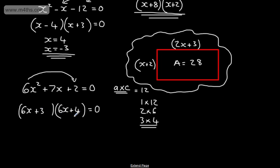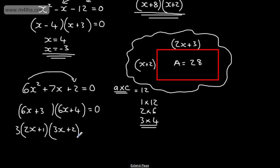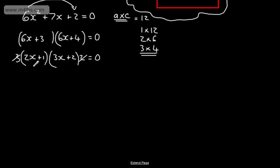Looking at the first bracket, I've got 6X plus 3. I can take the highest common factor of 3 out, which leaves me 2X plus 1. For the second bracket, the highest common factor of 6X plus 4 is 2, so that leaves me 3X plus 2, multiplied by 2, equal to 0. I can now simply cancel the 3 and the 2, and that is factored. So what we've got is 2X plus 1 multiplied by 3X plus 2 is equal to 0.